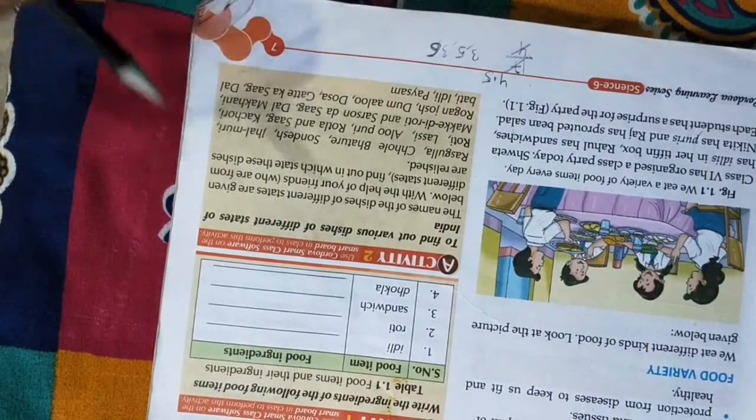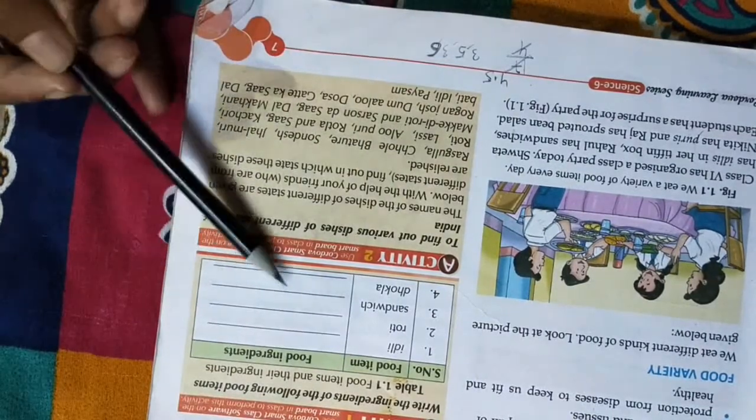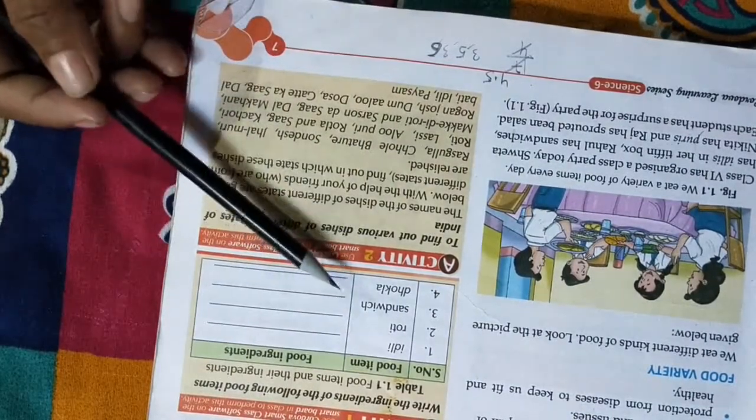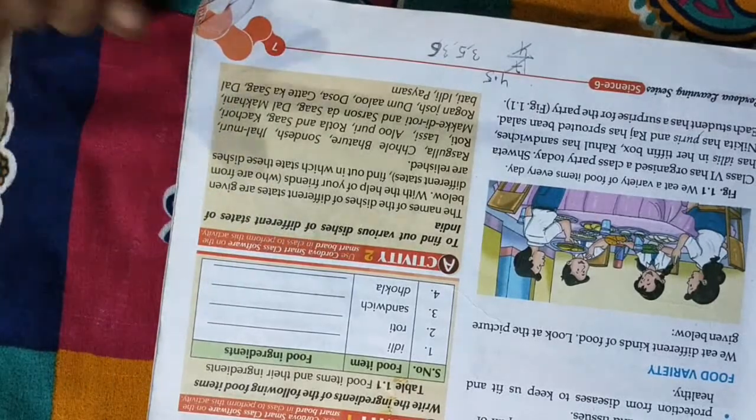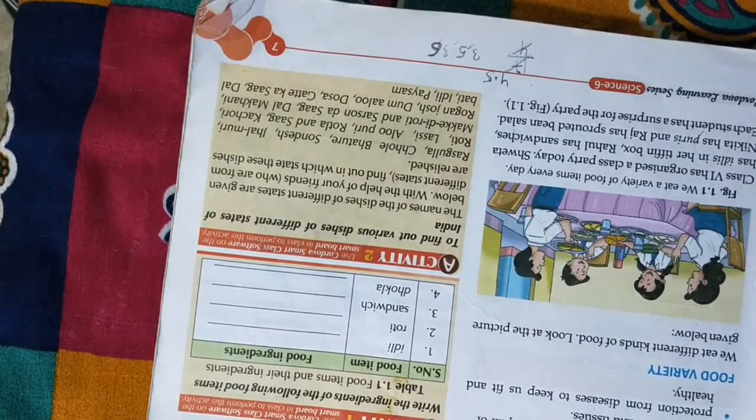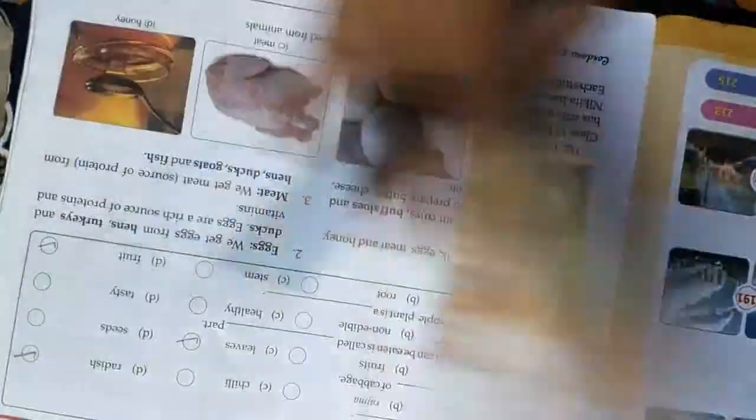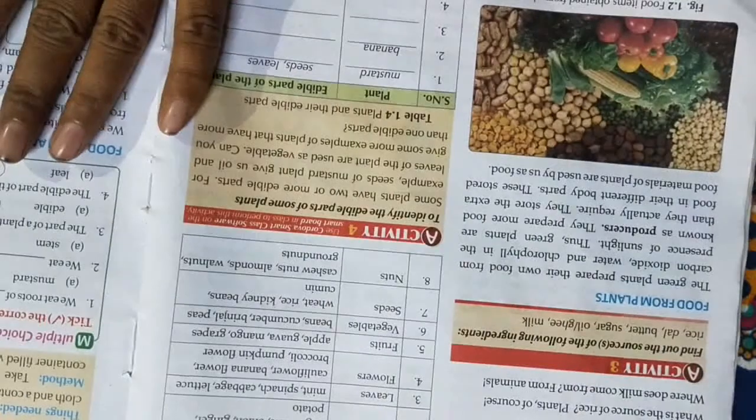Now there is an activity with idli, roti, sandwich, and dhokla, where you have to write the ingredients. Let's move to the next page: Sources of Food.